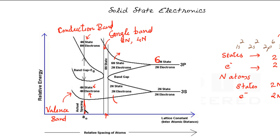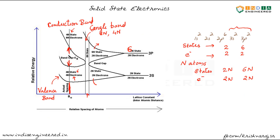This is the actual spacing in the case of the silicon crystal — the spacing where the atoms come together and form the silicon crystal. At zero Kelvin, the lower 4n states are completely filled with 4n electrons and the upper band is completely empty. There is an energy gap between these two bands where no available energy states exist, and this gap is called the forbidden energy gap.